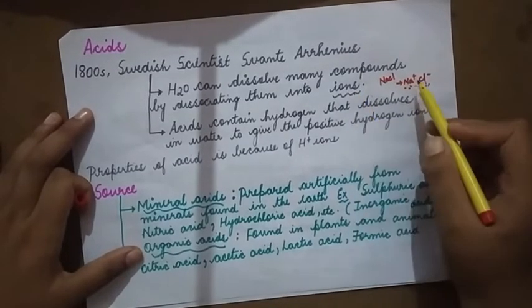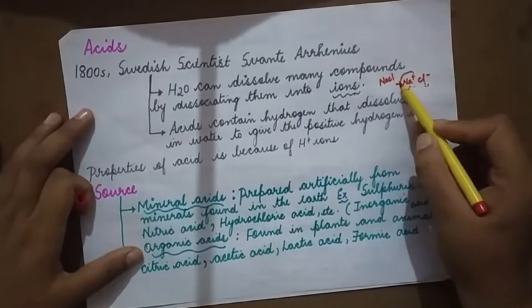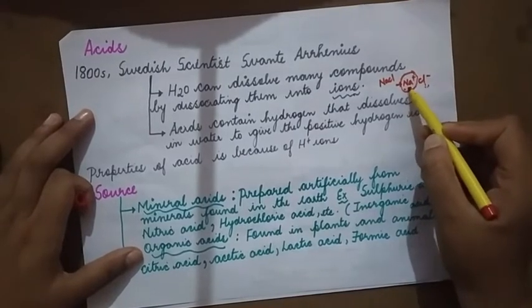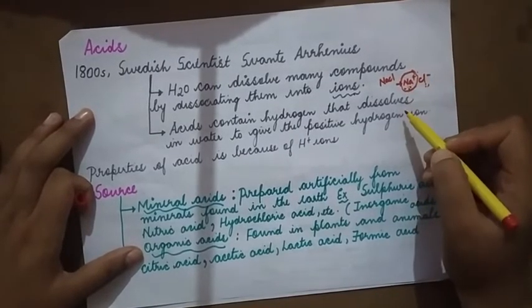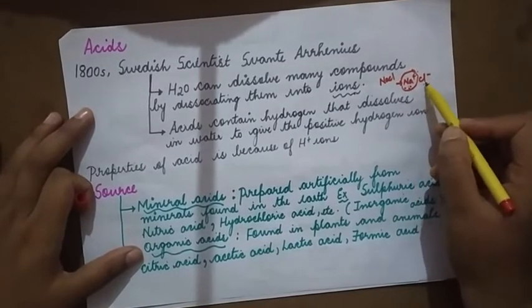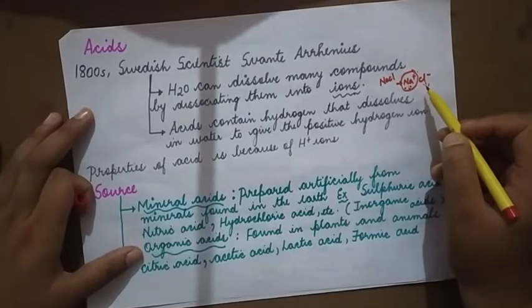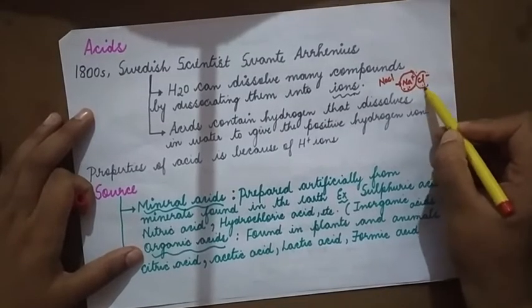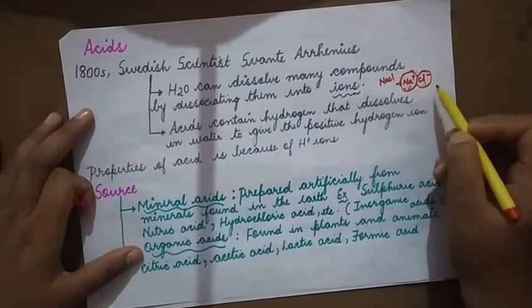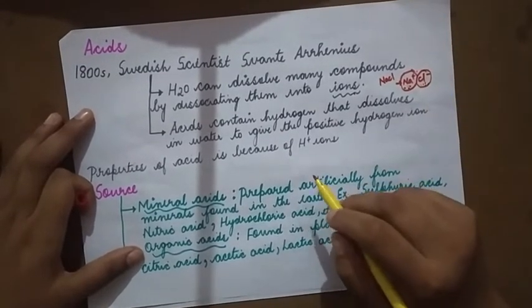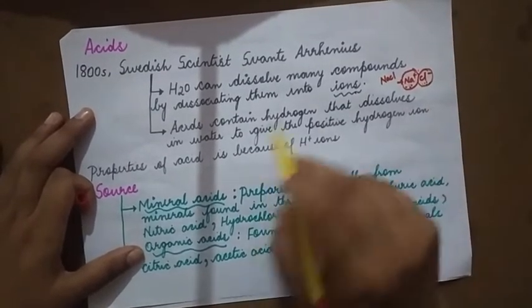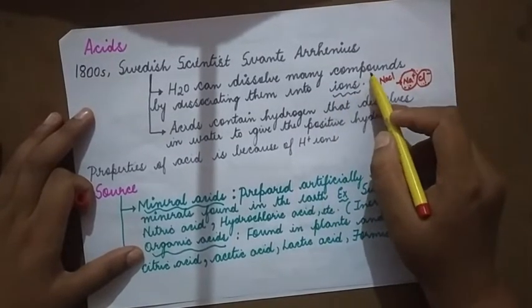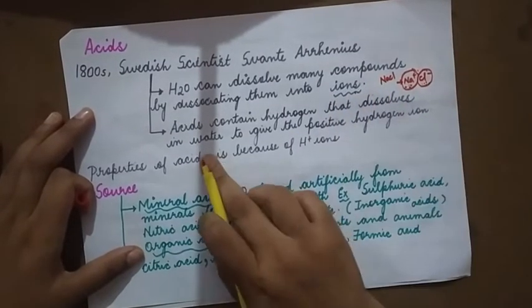What are ions? Ions are charged particles. Na+ is a charged particle and Cl- is a charged particle. So ions are nothing but charged particles, and they are formed by the breaking down of compounds.